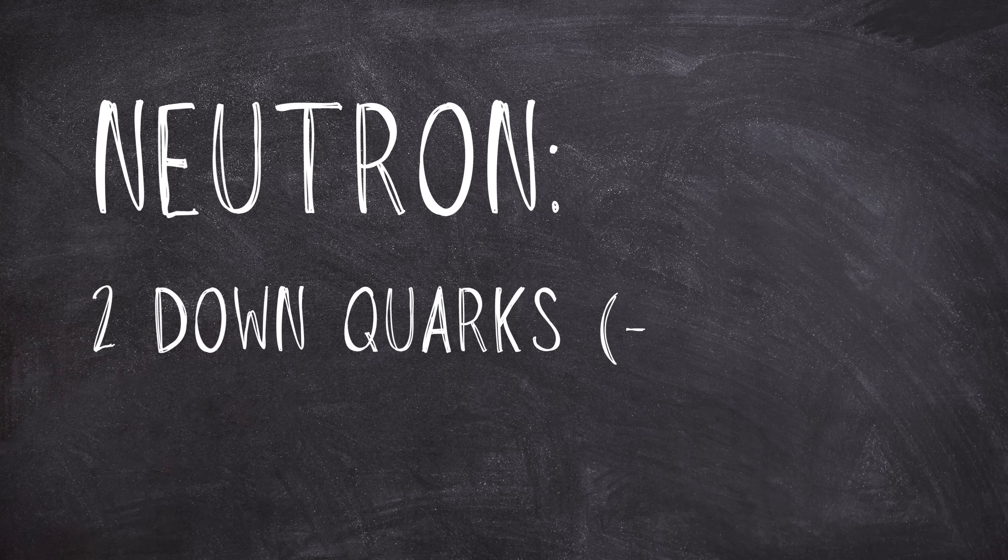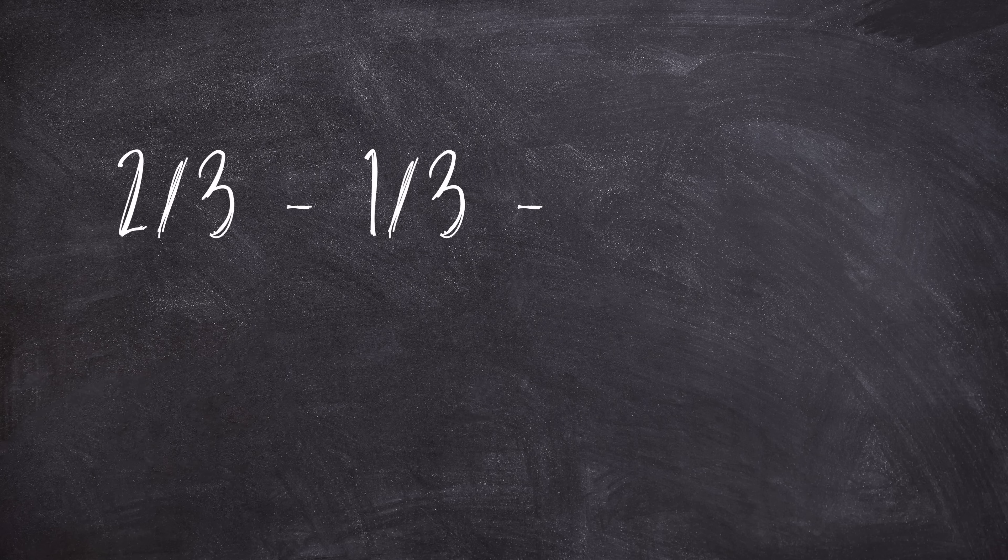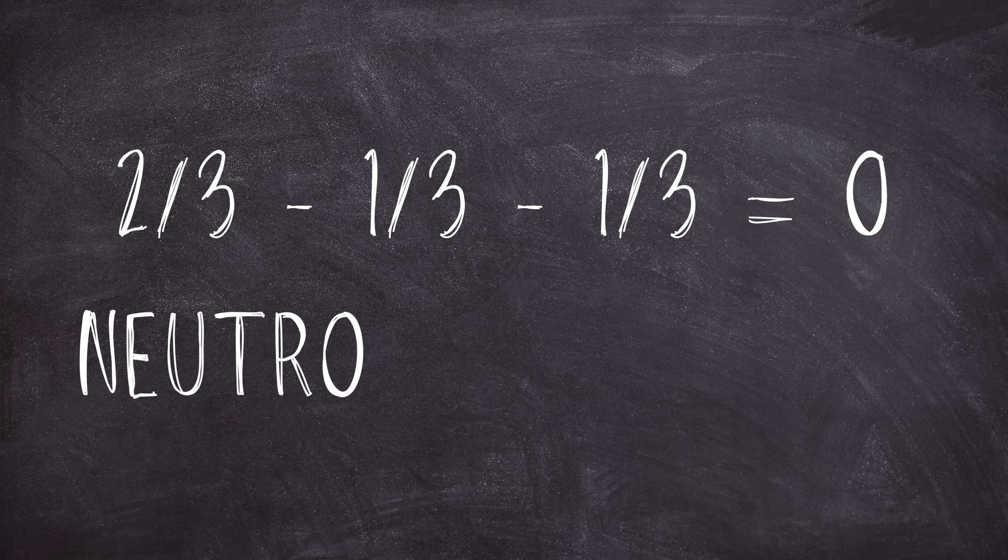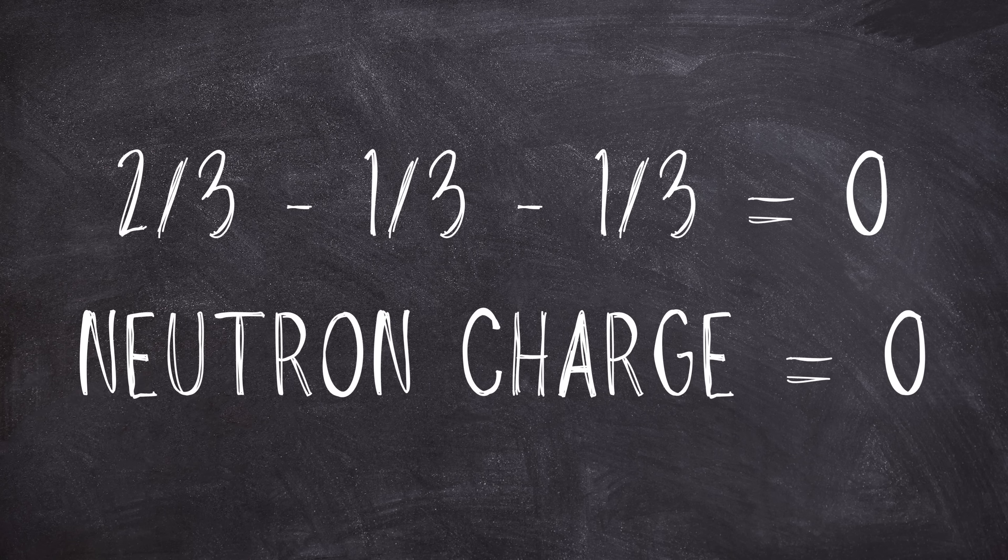Neutrons, on the other hand, consist of two down quarks and one up quark. Two down quark charges add up to negative one-third plus negative one-third equal negative two-thirds. When we add this to the charge of the up quark, positive two-thirds, they cancel out and we get zero, which is the net charge of a neutron.